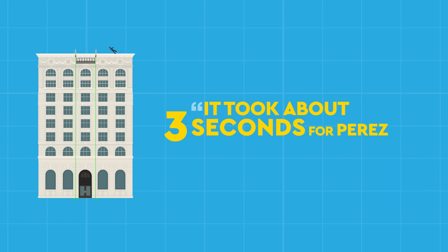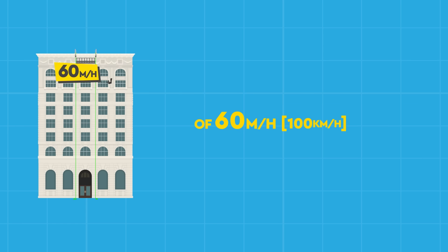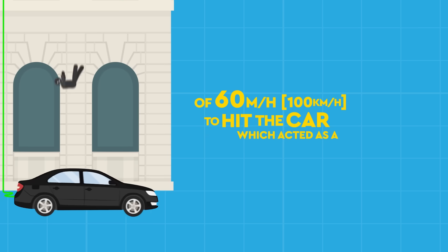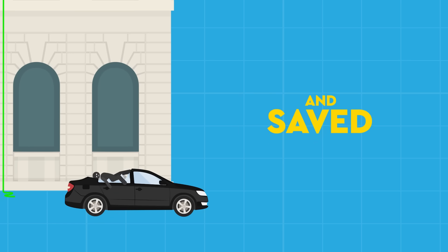It took about three seconds for Perez, falling at an estimated speed of 60 miles per hour, 100 kilometers per hour, to hit the car, which acted as a big shock absorber and saved his life.